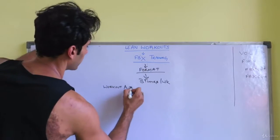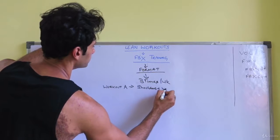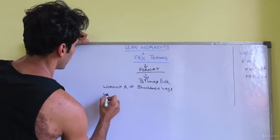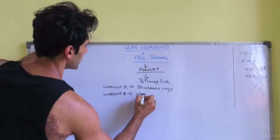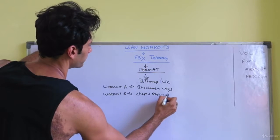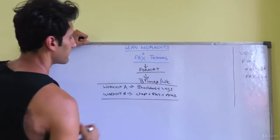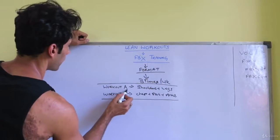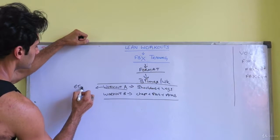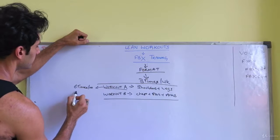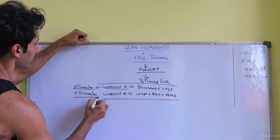I'm asking you to combine, in workout A, shoulders with legs. In workout B, I'm asking you to combine chest, back, and arms. I've given you a monthly chart where workout A will come six times in a month, similarly workout B will also come six times in a month.